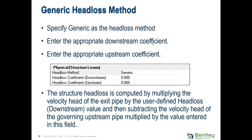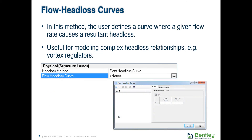In addition to that, there's a generic head loss method. You can specify the downstream coefficient and the upstream coefficient. We compute the head loss by multiplying the velocity head of the exit pipe by the downstream coefficient, then subtract the velocity head of the incoming pipe multiplied by the upstream coefficient. You can also get more advanced and come up with your own flow versus head loss curves and input them in the software — useful for drop structures or other special structure types.